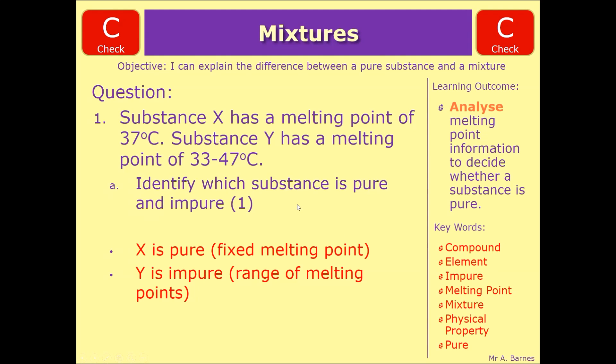Question 1a: identify which substance is pure and impure. Quite simply, X is pure. You know that because it's got a single melting point - it's not over a range. Whereas Y is over a range, therefore we say it's impure. You need both of those to get the one mark.